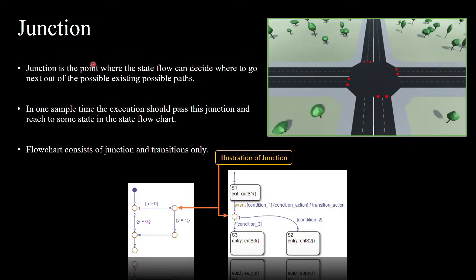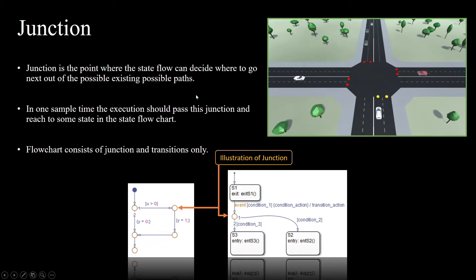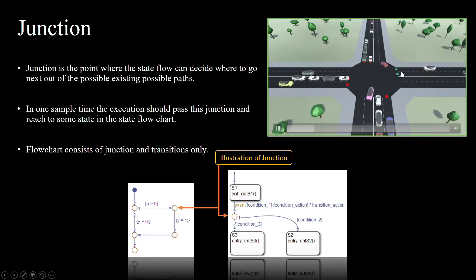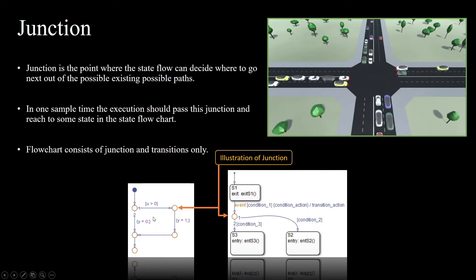Now we will look into the concept of junctions — what is a junction and how it is operated. This is the same concept as a junction we usually see in traffic: when the light goes green, the vehicle can pass. That condition is being satisfied, then only we are going into some other part. This usually happens in stateflow as well as flowchart in the same way — the condition needs to be satisfied then only it can reach these junctions.